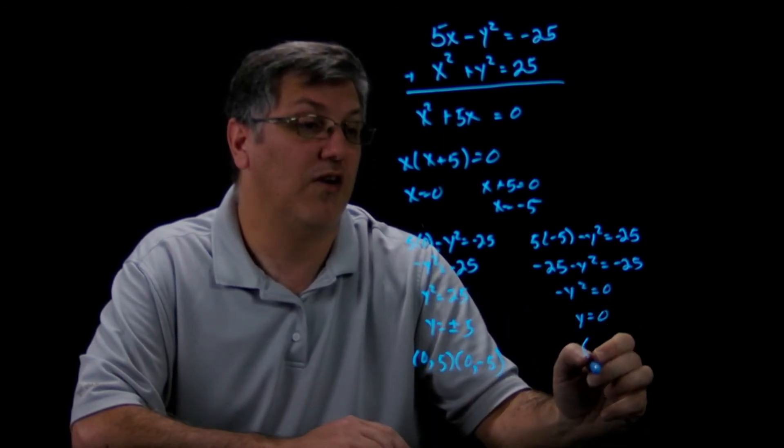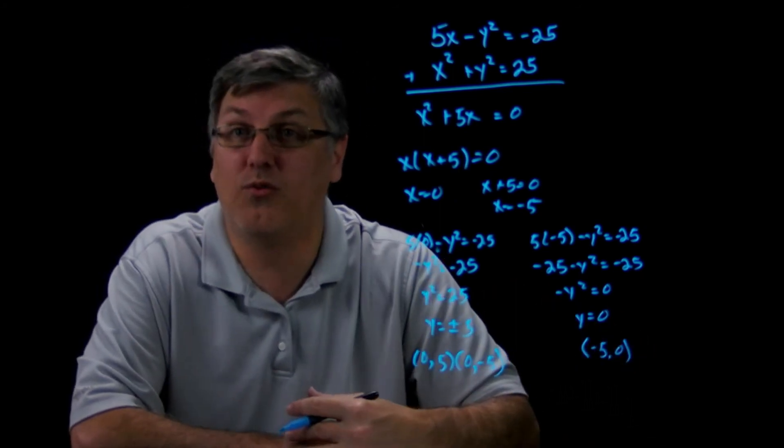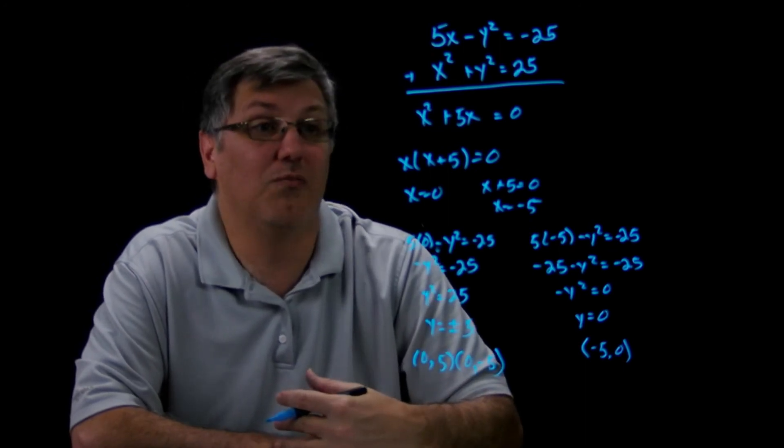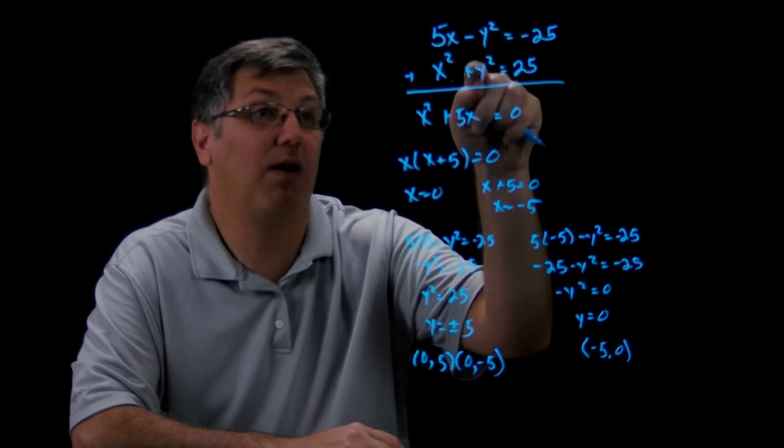Well, you can see pretty quick that y is going to equal 0. So I have another point at (-5, 0). So this actually only has three points where they intersect. But the elimination, to me, is much faster because you get right into the factoring and finding the points just by a quick inspection here.